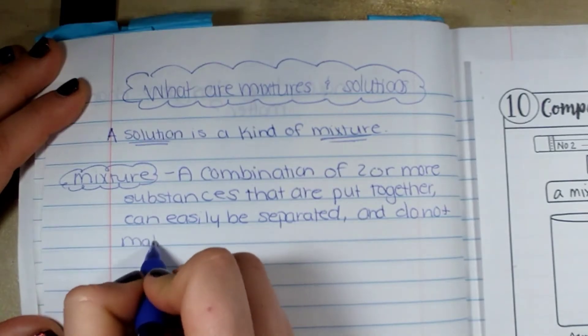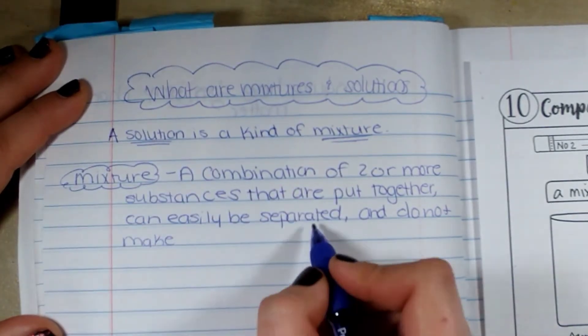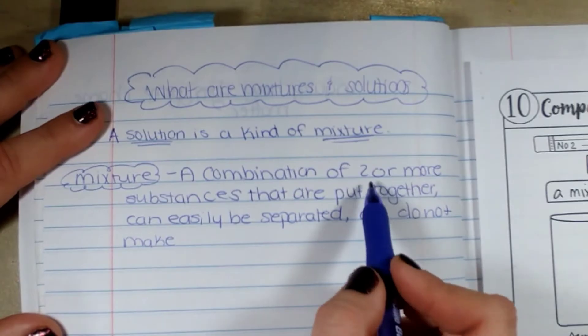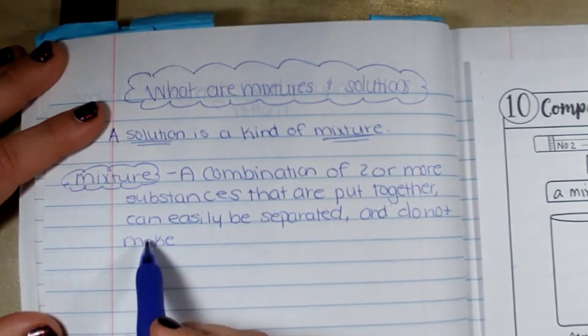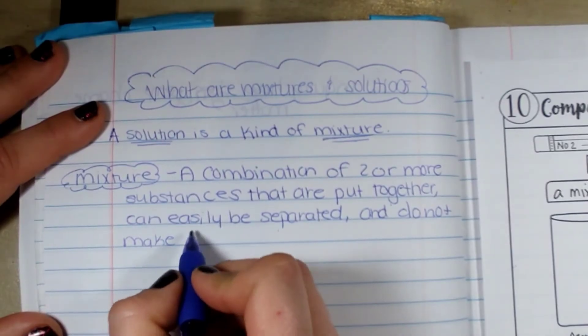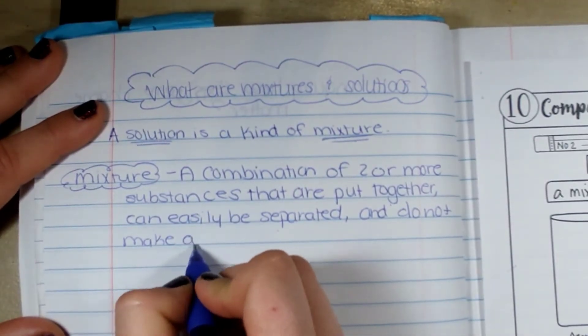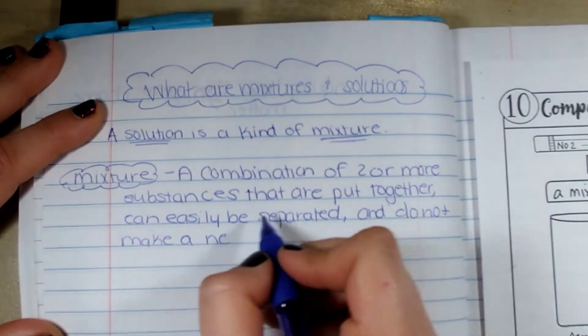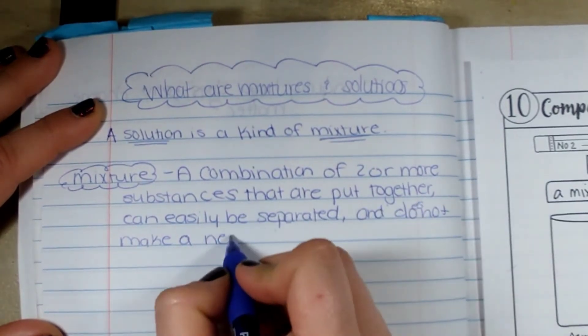So basically a solution is an example of a mixture but it is with two substances put together. But the difference is that it cannot be separated easily and it makes a new substance. Does not make a new substance.